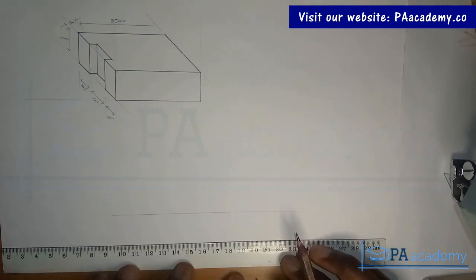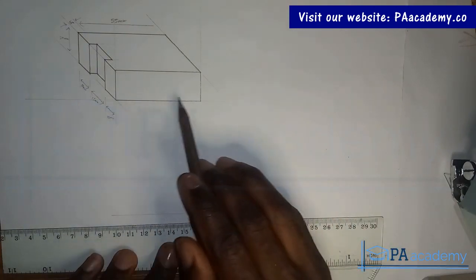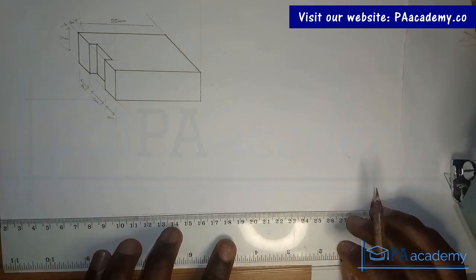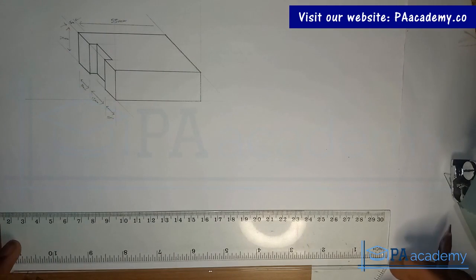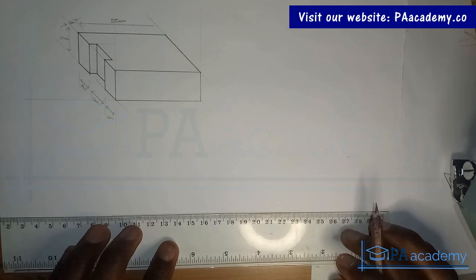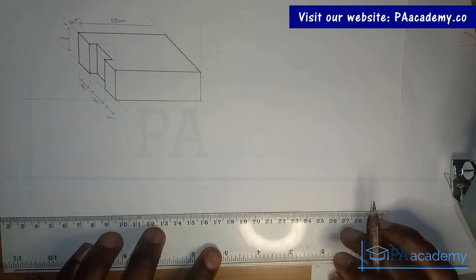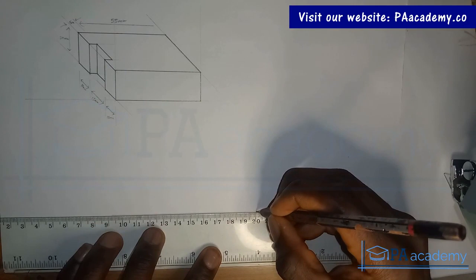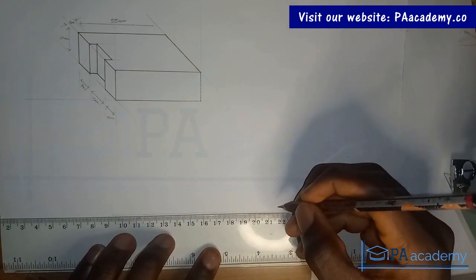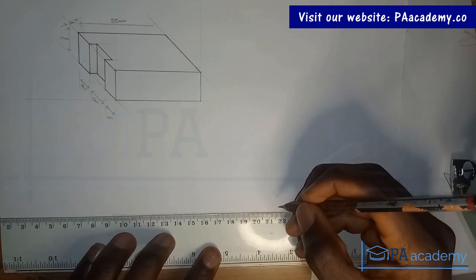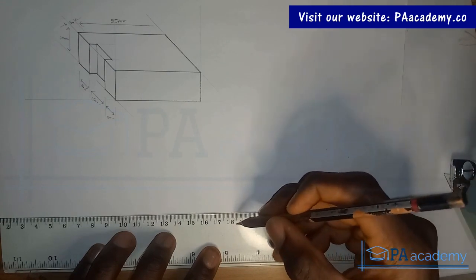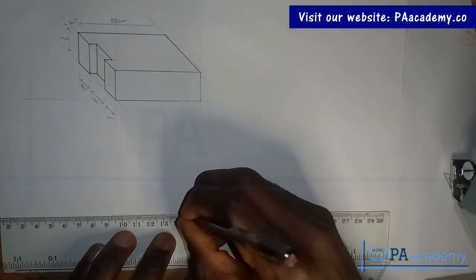Alright, so I've drawn my straight line. The length from here to here is given to be 55 mm which is 5.5. So let me just mark that part that we are going to be using on that line which is 5.5 cm. So this is from here. 1, 2, 3, 4, 5, 5.5.